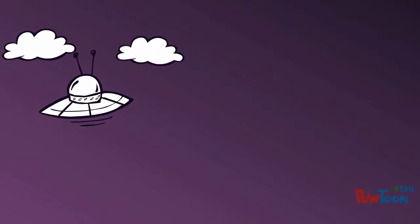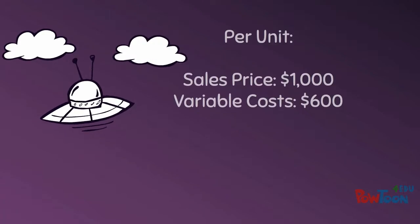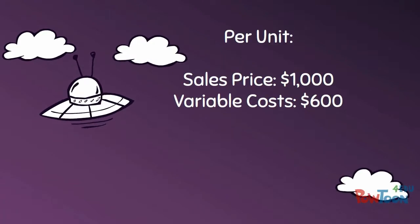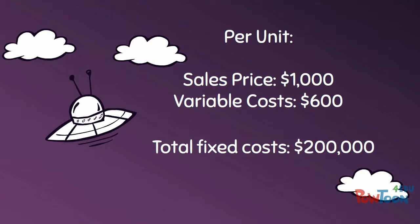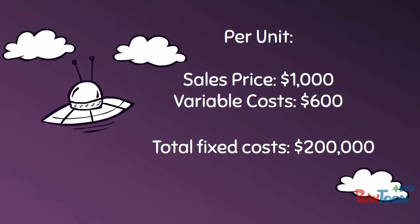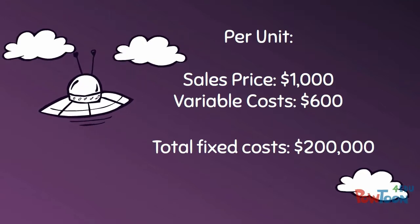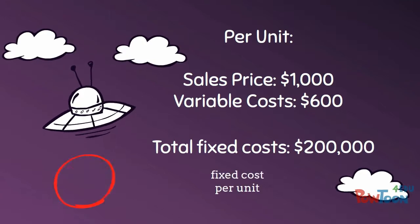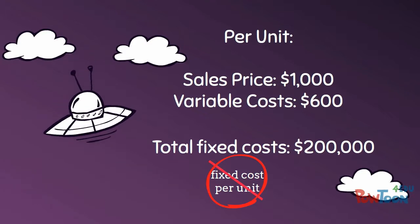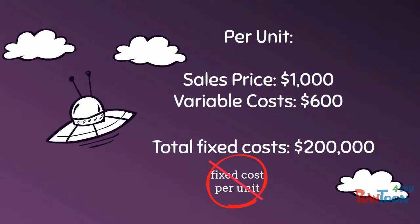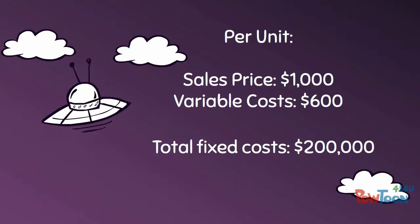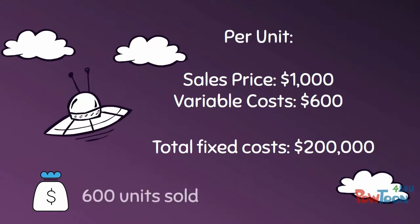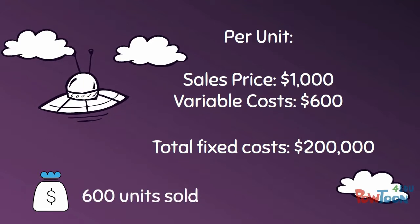Let's pretend that we make and sell spaceships. Our spaceships sell for $1,000 and our variable cost to produce those spaceships is $600 each. Total fixed costs are $200,000. Fixed cost per unit is not a necessary calculation.